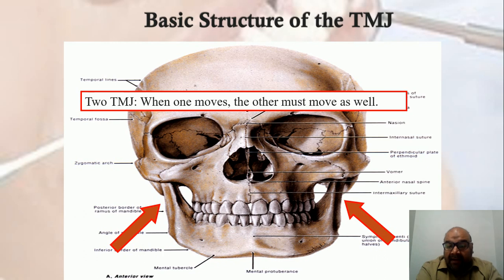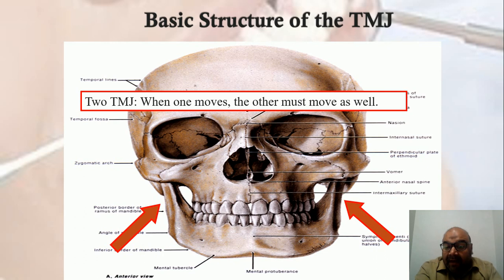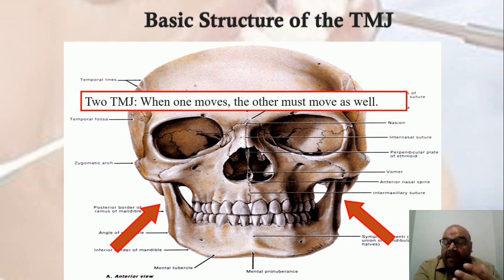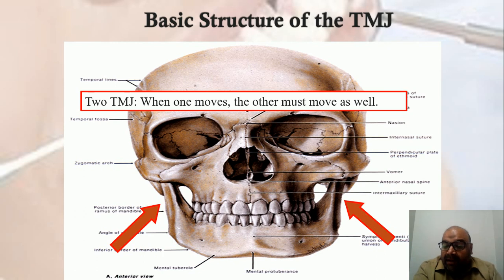The temporomandibular joint: we have two temporomandibular joints, and if one moves the other moves as well. There is simultaneous movement in both temporomandibular joints whenever we speak, pronounce anything, eat, or chew.